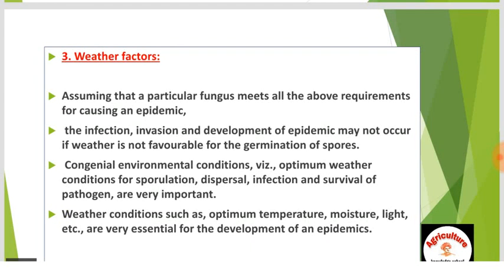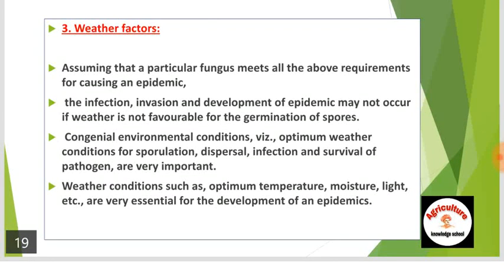Third is weather factors. Assuming that a particular fungus meets all the above requirements for causing an epidemic, the infection, invasion, and development of epidemic may not occur if weather is not favorable for the germination of spores. Congenial environmental conditions — optimum weather conditions for sporulation, dispersal, infection, and survival of pathogens — are very important. Weather conditions such as optimum temperature, moisture, light, etc. are very essential for the development of an epidemic.